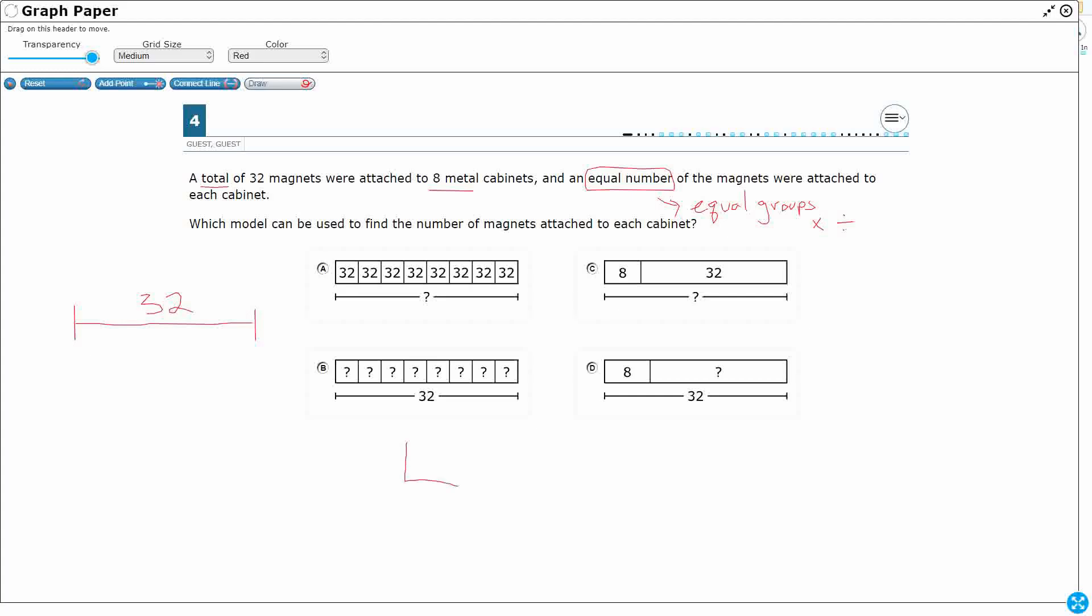So what I'm going to do is I'm just going to draw my 8 cabinets. I want to solve this problem, then I'll find the best representation for it. So here's my 8 cabinets, total of 32 magnets were attached to 8 metal cabinets in equal number. So I'm going to take my 32 and start splitting them up. 1 in each, 2, 3, 4, 5, 6, 7, 8. So there's one each.